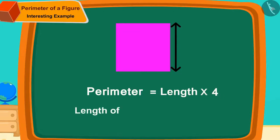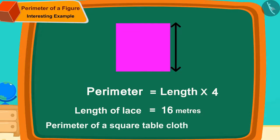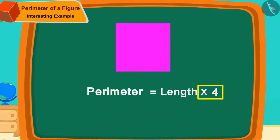The length of Banno's lace is 16 meters. It is exactly equal to the perimeter of a square-shaped tablecloth. In other words, 4 times the length of one side of the tablecloth is equal to 16 meters.